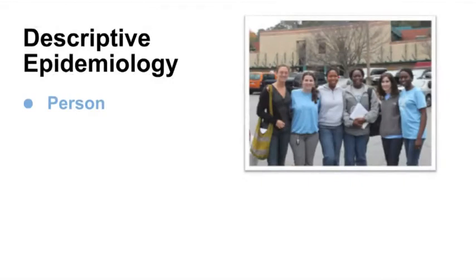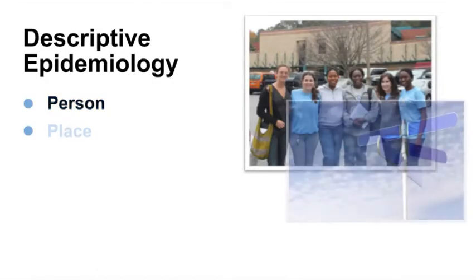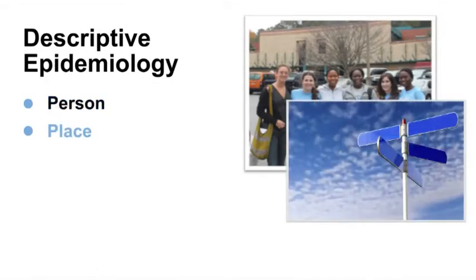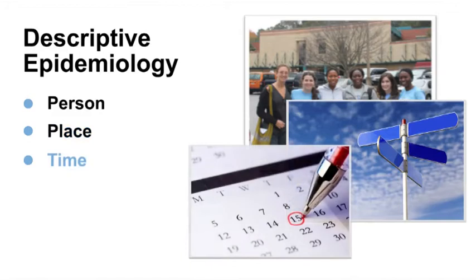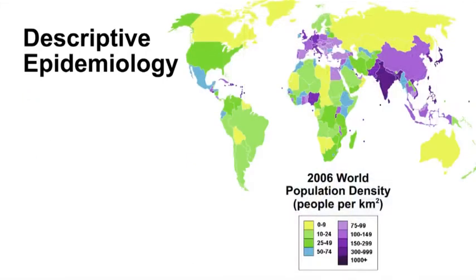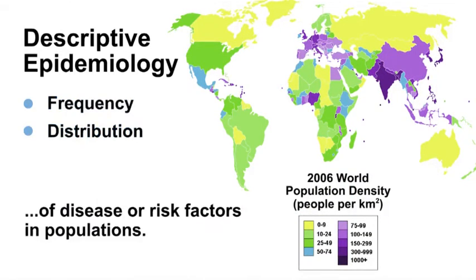Descriptive epidemiology refers to characteristics of persons, such as age, sex, race, and socioeconomic status; characteristics of place, such as country, province, state, city, zip code, or census track; and characteristics of time, such as long-term trends and short-term variations by week or day. When we ask what is the distribution or pattern of a disease or health outcome in the population, we are talking about descriptive epidemiology. Descriptive epidemiology deals with the frequency and the distribution of disease or risk factors in populations.